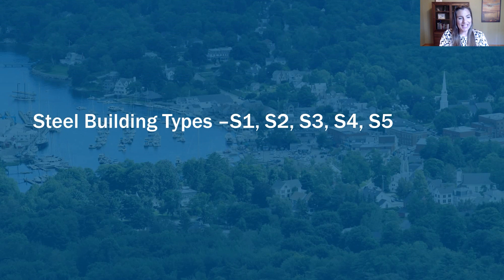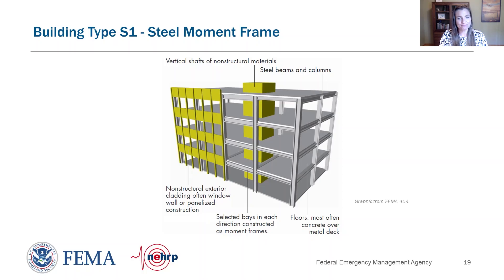Now let's get to steel buildings — five different types. The first is the steel moment frame, building type S1. These buildings have vertical columns and horizontal girders made from steel H-shaped sections or I-beams. The floors deliver the weight of building contents to the beams and girders, and can be constructed with concrete slab, wood floors, or metal deck. The girders and columns support the full weight of the building and provide the seismic force resistance system, with steel beams and columns around the perimeter forming both the gravity frame and the lateral frame.